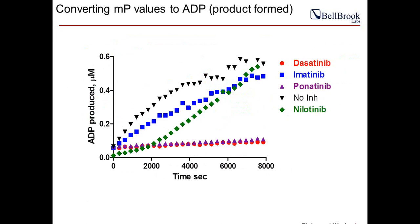The more accurate approach is to take the polarization values and convert them into product formed using a standard curve run side-by-side with the residence time experiments. Converting each polarization value based on the standard curve into the amount of ADP produced reveals the curvilinear shape predicted for slowly dissociating enzymes — which becomes apparent after this conversion.